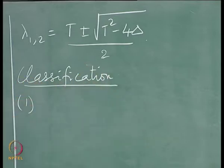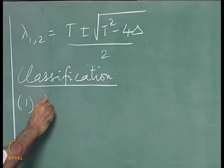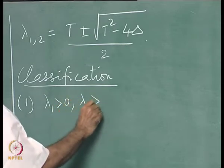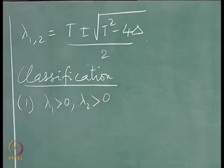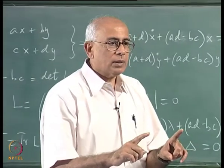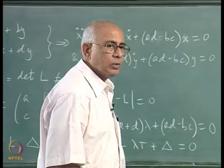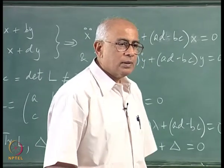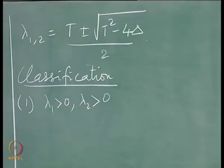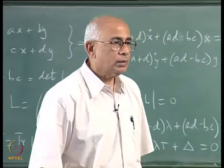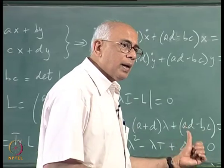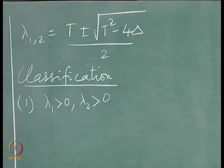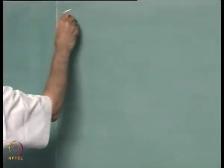The first possibility is that λ₁ and λ₂ are both positive. The solutions are exponentials e^(λ₁t) and e^(λ₂t), so as time goes on these are growing exponentials. The flow would be away from the critical point in all directions — this is an unstable critical point. Let us look at a simple example.